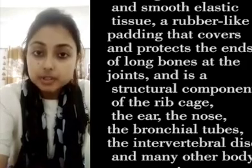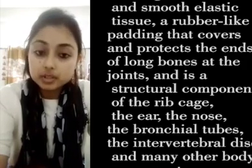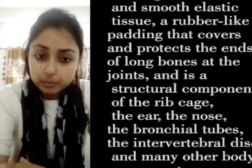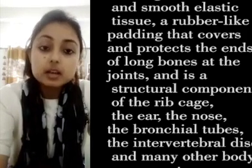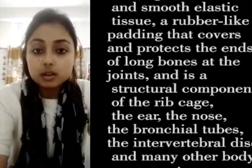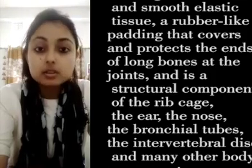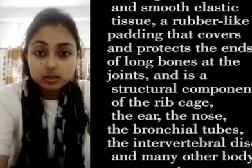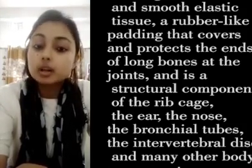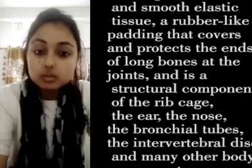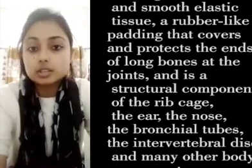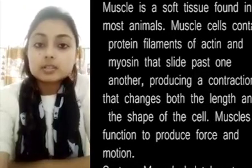The function of cartilage is that it prevents organs from rubbing against each other. So cartilage is a hard elastic substance that covers the ends of bones at a joint, gives shape and support — for example to the ear and nose — and prevents them from rubbing against each other. Now let us see what are muscles.